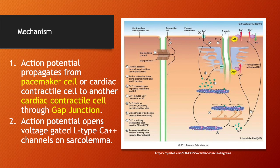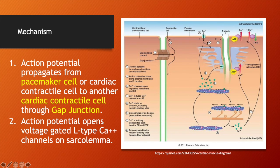This is the general mechanism of contraction of cardiac contractile cells. It all starts with a pacemaker cell, which is going to propagate an action potential to an adjacent cardiac contractile cell through the gap junction. The gap junction is important for transferring that electrical signal or action potential to the cardiac contractile cell. Once the action potential travels along the sarcolemma, in step two, it is going to activate an L-type voltage-gated calcium channel and let calcium into the sarcoplasm of the cell.